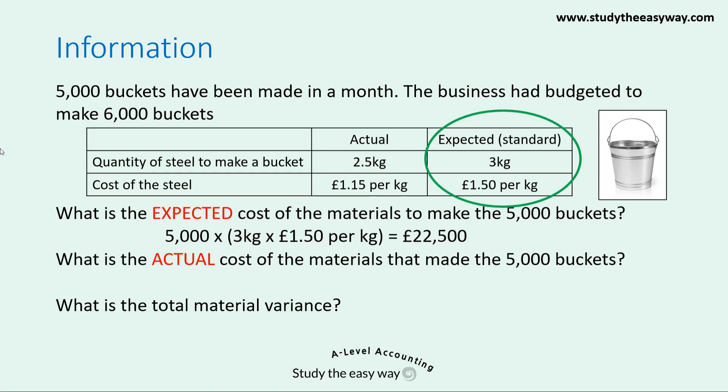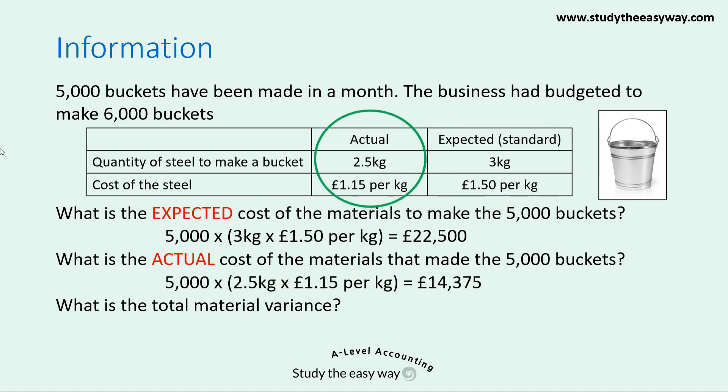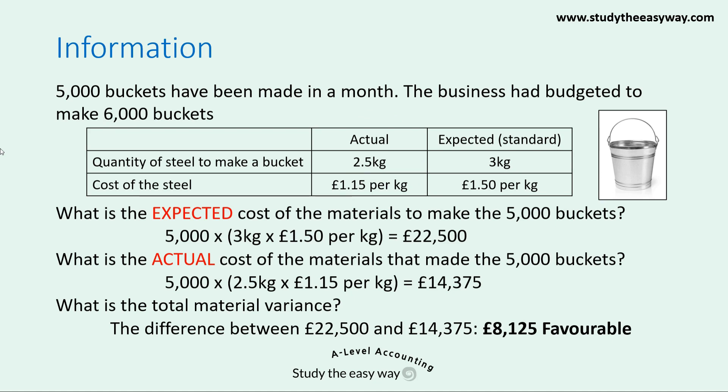The expected cost of making the 5,000 buckets is 5,000 multiplied by the cost of making each one. The business expected to use 3 kilograms of steel at £1.50 per kilogram, giving a figure of £22,500. The actual cost is 5,000 buckets multiplied by 2.5 kilograms of steel at £1.15 per kilogram, giving £14,375. The total material variance is the difference: £8,125. It's a favourable variance because the actual cost was less than the business had expected.